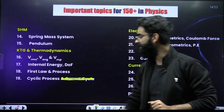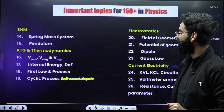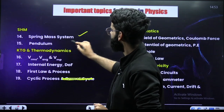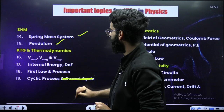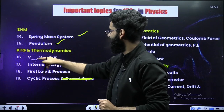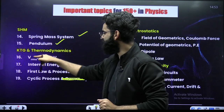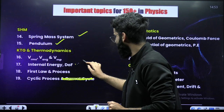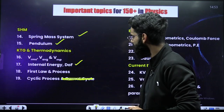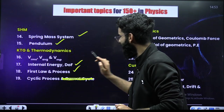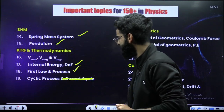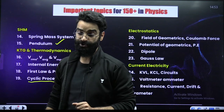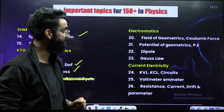These are the important topics from the chapters of Physics. Then you have got spring-mass system, pendulum. From KTG thermodynamics, different types of speeds — RMS, average and most probable speed. Internal energy, degrees of freedom. First law of thermodynamics and the processes. And again you have got cyclic process, from which a sure question is asked almost every year.